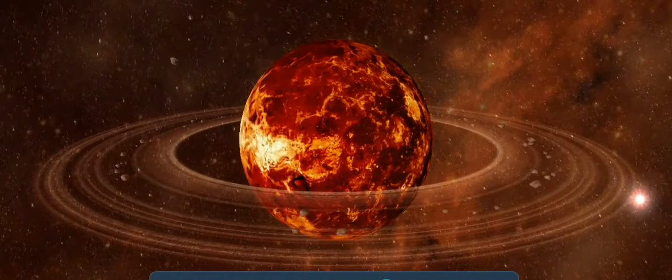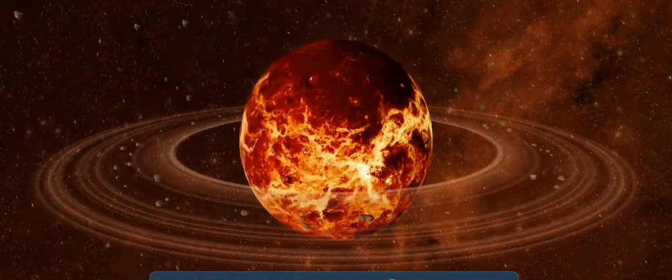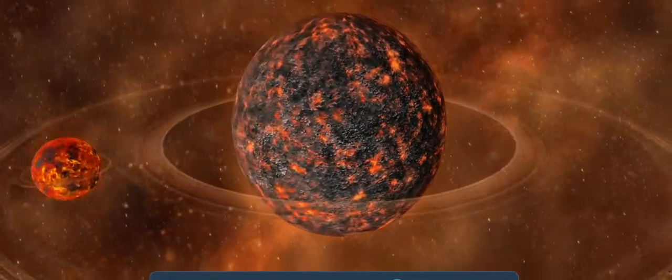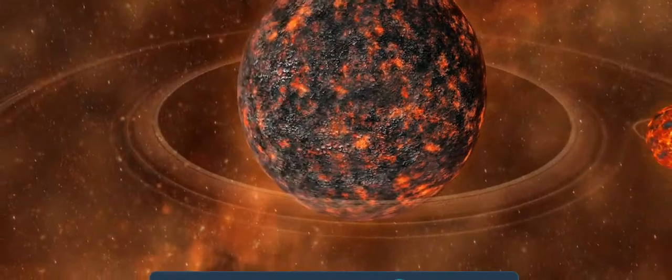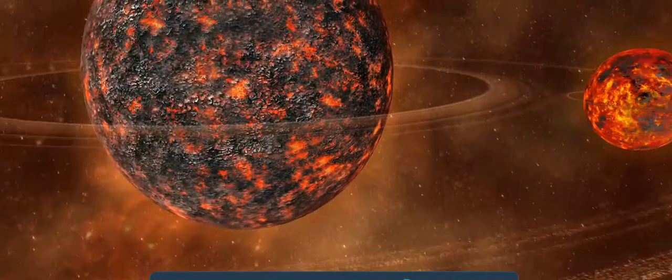The impact created a large ring of debris around the Earth, which later formed into the Moon. After the dissolution of the ring, the Moon became a glowing hot celestial body orbiting 25,000 kilometers above the Earth.